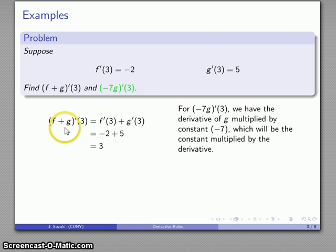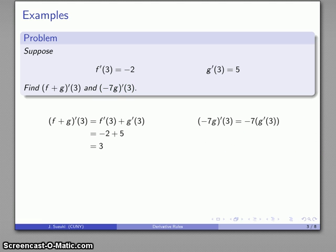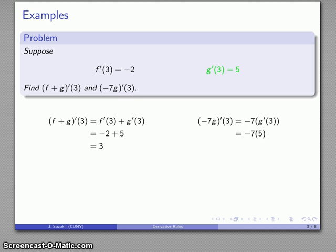Now for the other expression: the derivative of minus 7 times g evaluated at 3. Here I have the constant multiple minus 7 multiplied by my g function. The derivative of a constant multiplied by a function is the same as the constant times the derivative of the function. So that's minus 7 times g prime of 3, and I can do the computation.